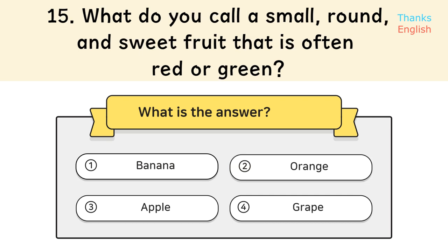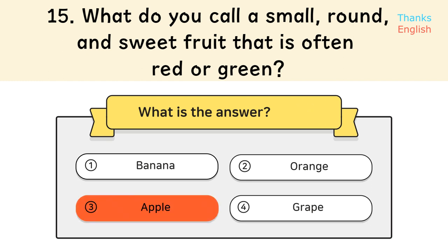Question 15: What do you call a small, round, and sweet fruit that is often red or green? Answer 3: Apple.